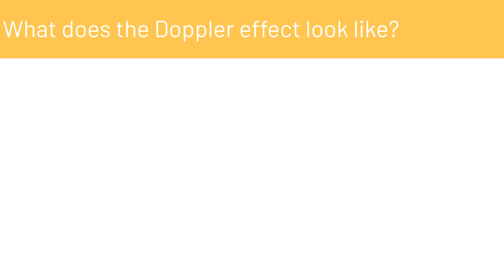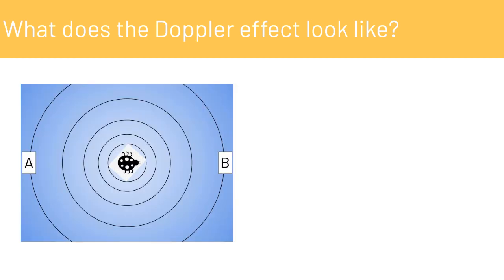Let's take a look at what this actually looks like. Here we have a bug sitting in a pool of water, and we have observer A over here and observer B over here. They are equidistant from the bug sitting in the pool of water.